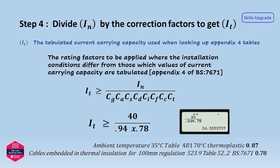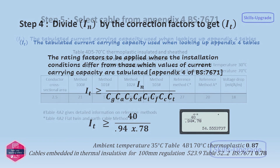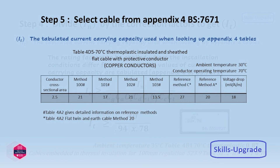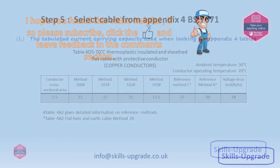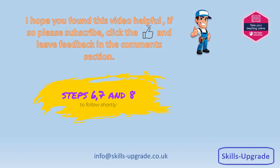Once we have the rating factors applicable to our circuit, we divide In by them to get the tabulated current capacity. When looking up a suitable cable from appendix 4, in this example ambient temperature and cable embedded in insulation have been applied. We can now look in appendix 4 to select a suitable cable.